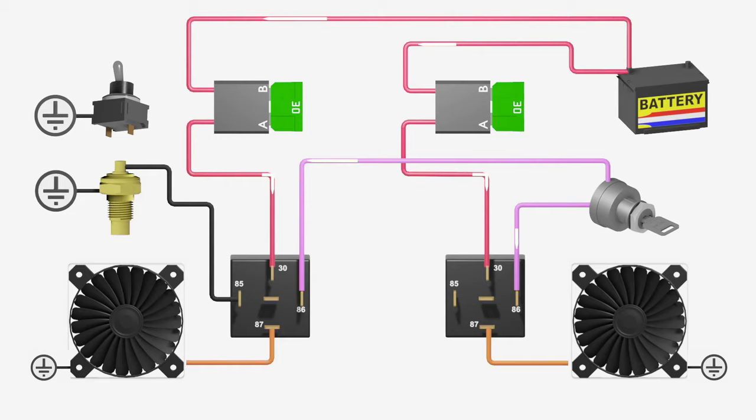Connecting one relay 85 circuit to a temperature sending unit will cause it to function just like a single electric fan. Once the sender reaches the correct temperature, the ground circuit is completed and the fan turns on.